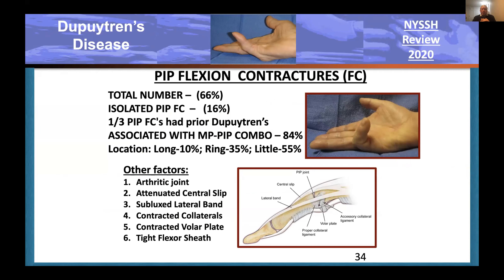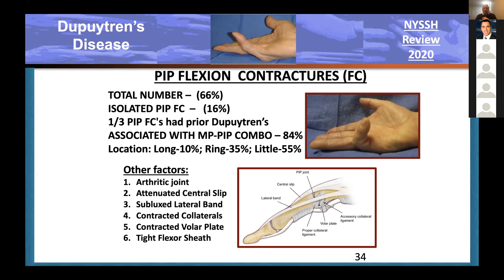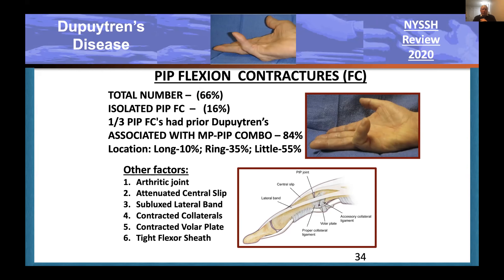The PIP contracture is a particularly troublesome part of Dupuytren's disease. In the collagenase population I've looked at, 66% of patients had some part of a PIP contracture, most often in combination with an MP contracture—more commonly in the little finger. Other conditions affecting PIP extension include arthritis; attenuation of the central slip and extensor hood from severe long-term flexion; volar subluxation of the lateral bands, which become a contracting element; contraction of the collateral ligaments, volar plate, and even the flexor tendon sheath. I once surgically cut everything to the point the finger would dislocate at the PIP, but it was still fixed in flexion—the lateral bands then had to be released.